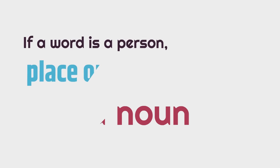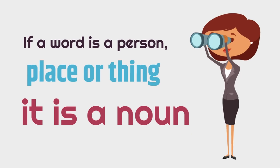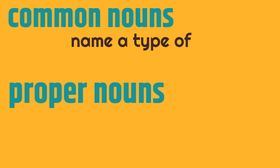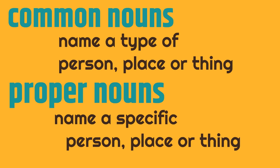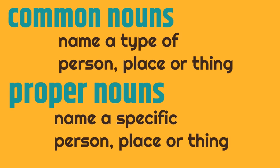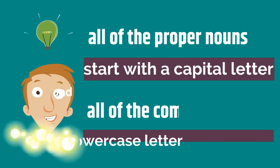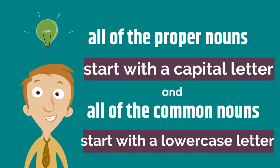To review: if a word is a person, place, or thing, it is a noun. And there are two types of nouns — common nouns, which name a type of person, place, or thing. And all of the proper nouns start with a capital letter, and all of the common nouns start with a lowercase letter.